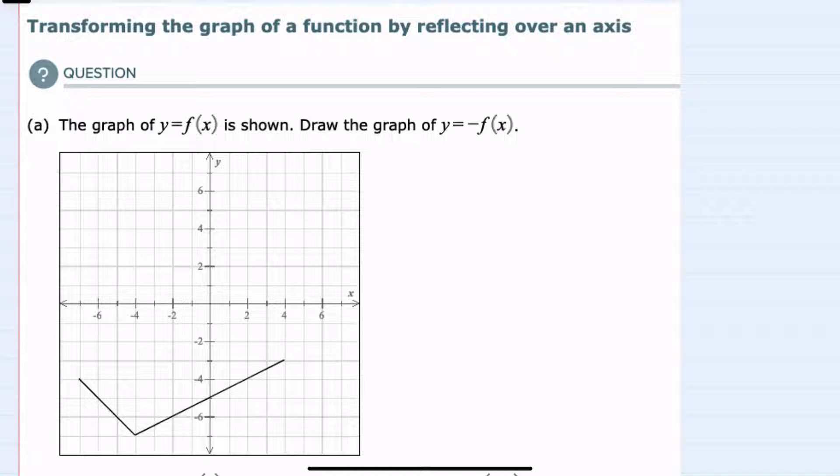For our first example, we're given the graph y equals f of x, and we're asked to graph y equals negative f of x. Since that negative is outside the function, f of x is the y values, so the negative outside of the f of x will change the signs of all of the y values. So negative f of x reflects the graph across the y axis.